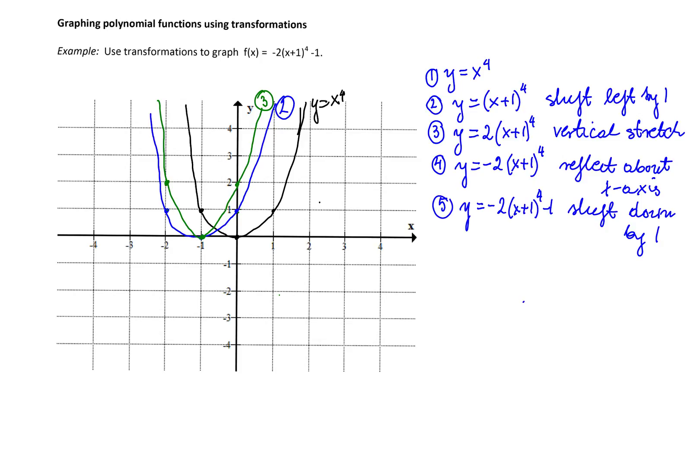Then I need the graph of negative 2 times x plus 1 to the fourth, which means I need to reflect graph 3 about the x axis. Point (-1, 0) stays where it was. Point (0, 2) reflects to become point (0, -2). And point (-2, 2) becomes point (-2, -2). We draw the reflected graph. This is the graph of the function negative 2 times x plus 1 to the fourth.